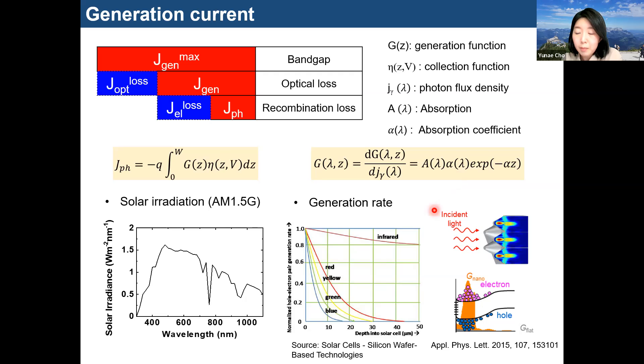As you know, we use the solar spectrum depending on the wavelength. And next, this figure shows the generation rate. The G value is the generation rate depending on the depth.